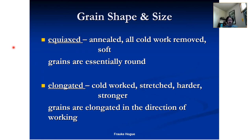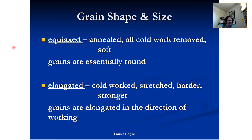The words of Frauk Hoag: equiaxed grains are typically annealed — anything done with cold working is removed and the grains are essentially round. The annealing process puts energy into the system, and the material tries to lower its energy, so grains form as close to a circle as they can. If you look at artists' depictions of grain structure, they're always like a honeycomb because it's the closest packed structure — the easiest way to pack without gaps. That's why grains ideally want to look like a honeycomb.